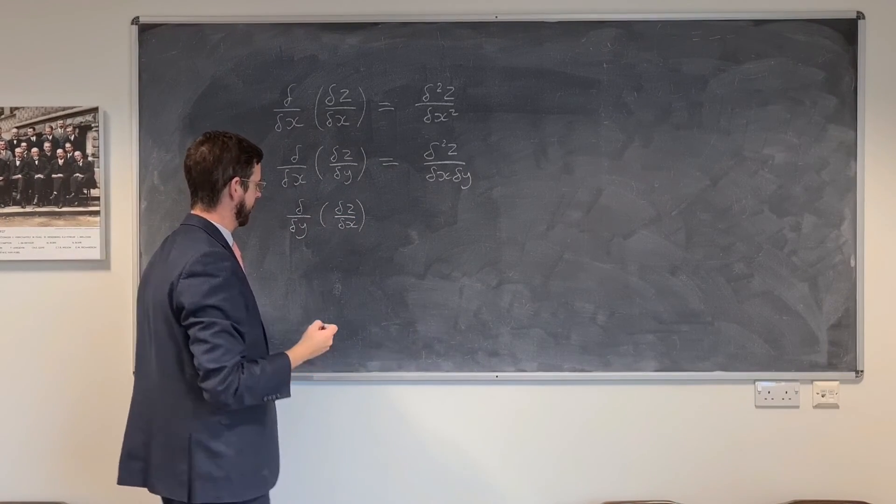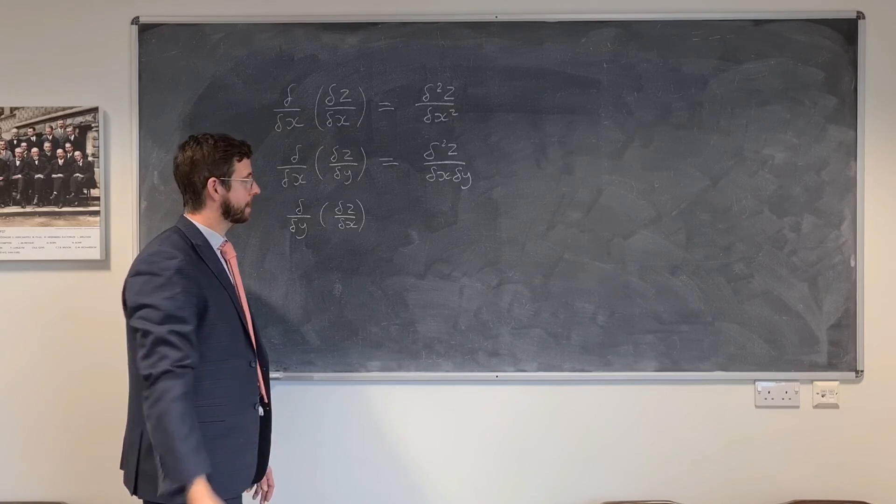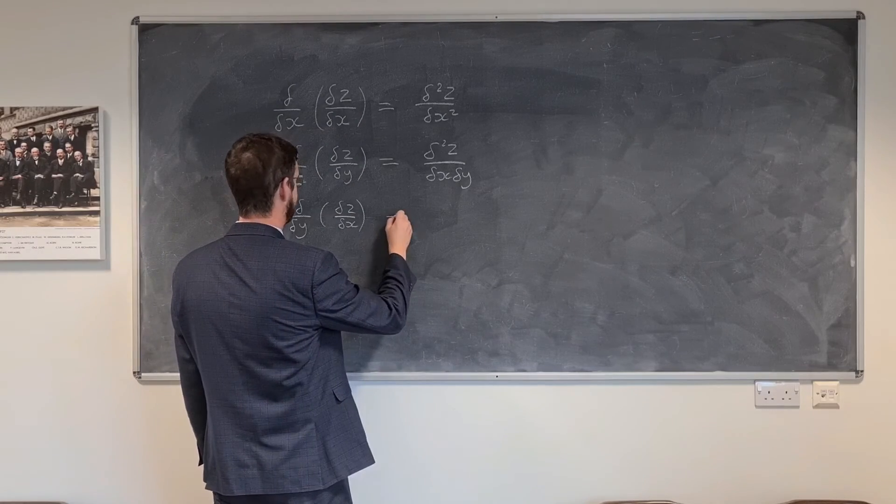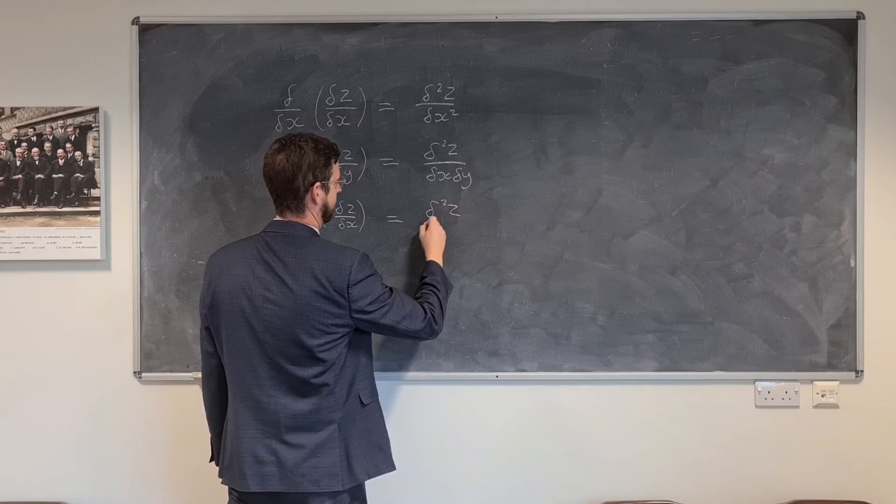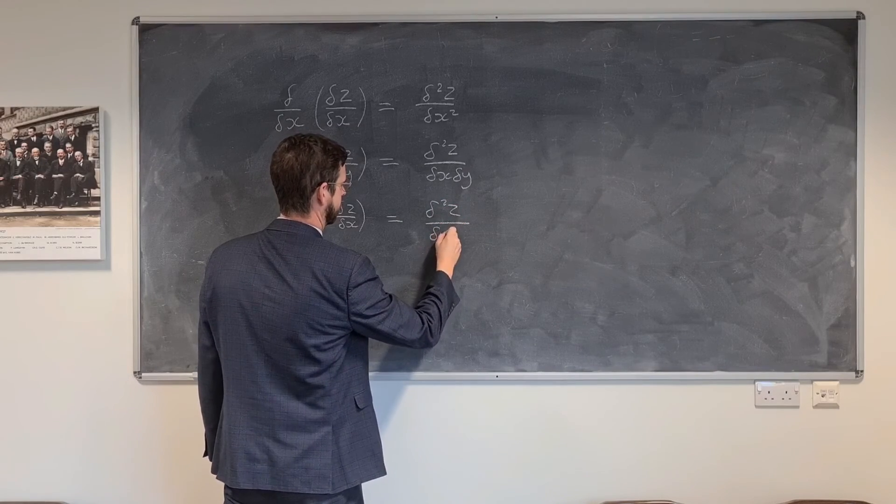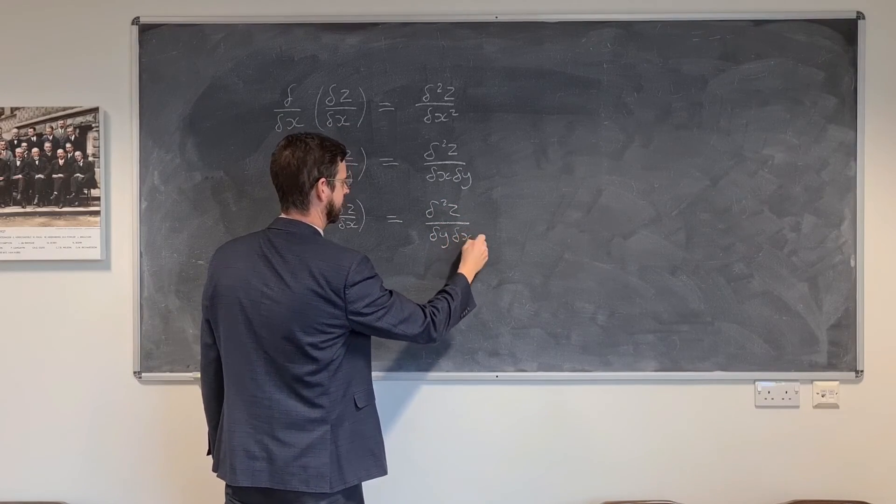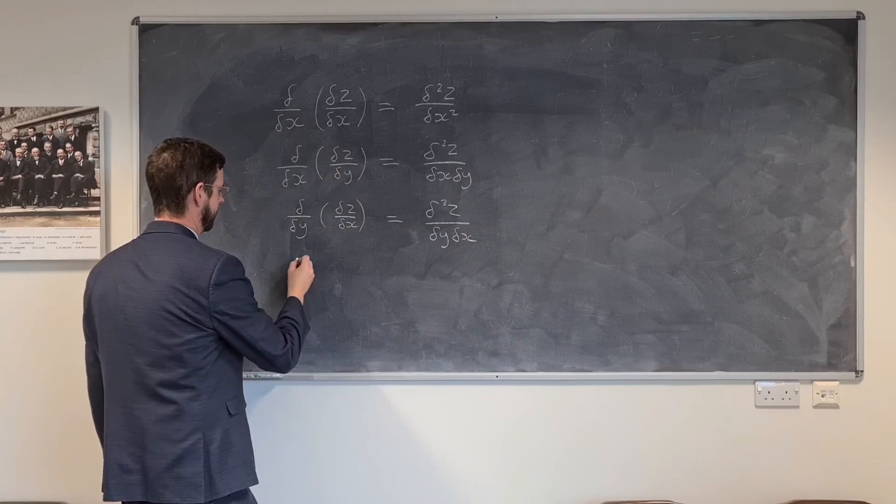and we could have dy here, so we first differentiate with respect to x, and then second we differentiate with respect to y. And then this creates similar, but just the order is reversed, but of course that doesn't mean anything, because it's independent of the order.